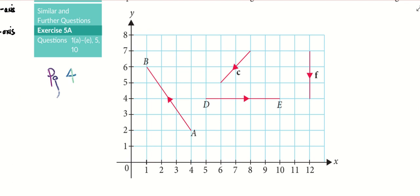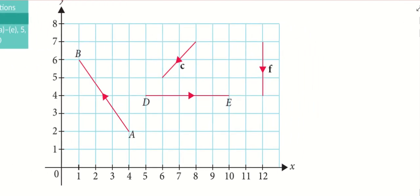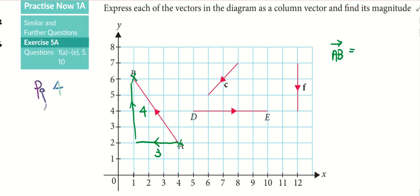So in this particular question, I'm supposed to represent all these vectors as a column vector. Let's take a look at the very first one. You can see the starting point is A, the ending point is B. For us to get from A to B, I have to move 3 units to the left, 4 units up. So if I want to represent this in a column vector, the number on top is negative 3, number below is 4. Please remember to put your bracket.